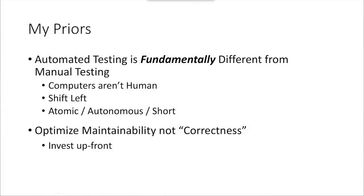Anyone who has put together any kind of framework and maintained any kind of test suite knows that by far the most expensive part of that process is the maintenance costs. Creation costs — not as much. Execution costs — not as much. You're going to spend most of your time and resources working on maintenance. So with all my recommendations, the question is: how can we reduce maintenance costs and optimize for not spending as much time maintaining code going forward, even if that means investing a little more time up front?